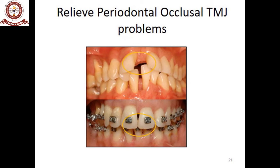To relieve periodontal problems, there is visible spacing and traumatic occlusion in the region of teeth 31, 41, 11, and 21, which reduces the longevity of the teeth. Treatment involved intrusion of the anteriors and extrusion of the posteriors to relieve the deep bite and close the spaces, so the teeth have better support from each other. For retention, a splint was given in both the lower and upper arches to provide better retention and stability.